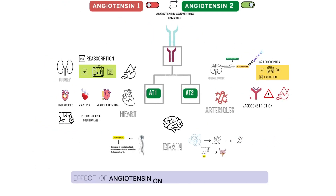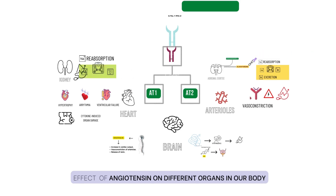On a long-term basis, the renin-angiotensin-aldosterone system controls blood volume and arteriolar tone. The baroreceptor reflex normally controls tiny and quick changes, although the RAS can change blood volume over time. Despite playing a vital role, the RAS can occasionally activate improperly in a number of situations, which can subsequently result in the onset of hypertension.